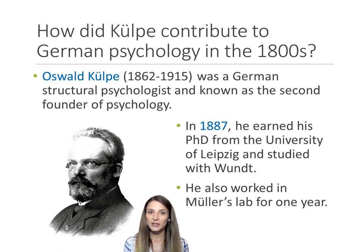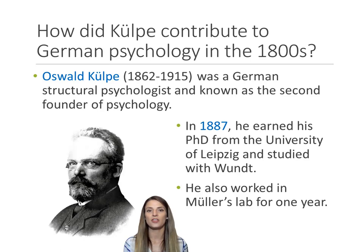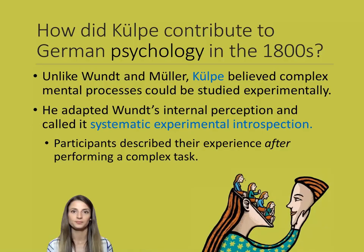One of the reasons that many of us don't know about Kolpe — one of the reasons he's not as famous as Wundt and some of the other early pioneers — is because he was a big supporter of structuralism, of structural psychology, which eventually falls out of favor and is replaced by functionalism and behaviorism. In the 1880s, he studied with Wundt at the University of Leipzig, earned his Ph.D. in 1887, and also worked in Muller's lab for one year.